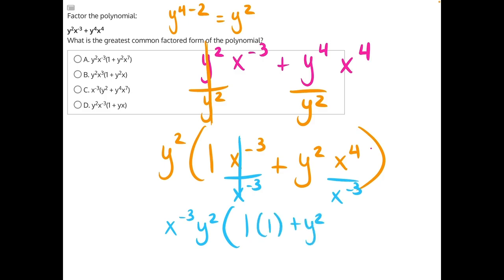And then over here again, like bases with exponents, and we're dividing. So that means x to the fourth minus a negative three. Be very careful with your signs there because subtracting a negative is the same thing as adding a positive. So now this problem becomes x to the seven.